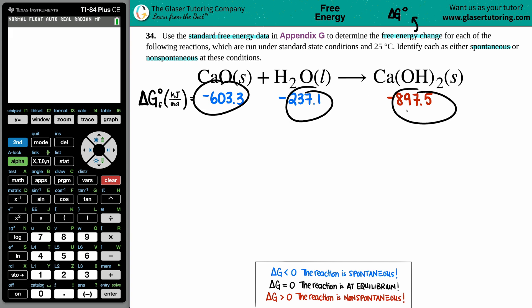So I went to the back of the textbook to find out what the delta G values for each of these compounds are. CaO is -603.3, H2O liquid is -237.1 kilojoules per mole, and calcium hydroxide is -897.5 kilojoules per mole.